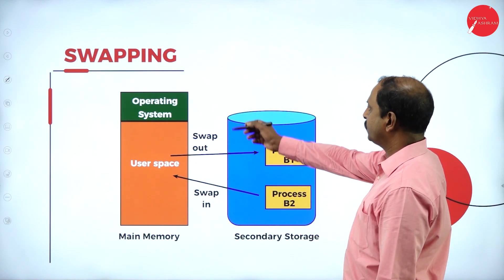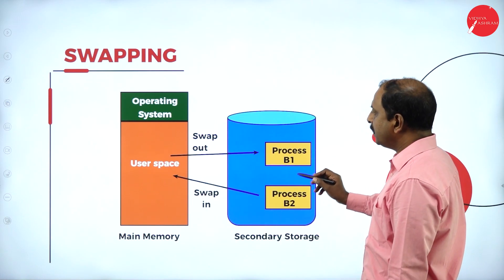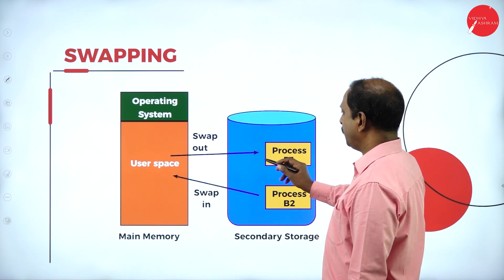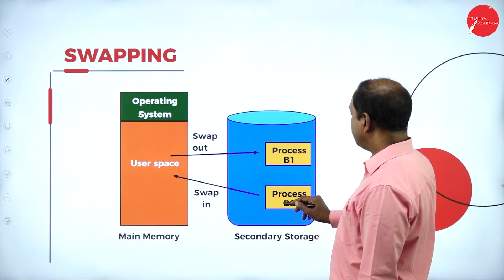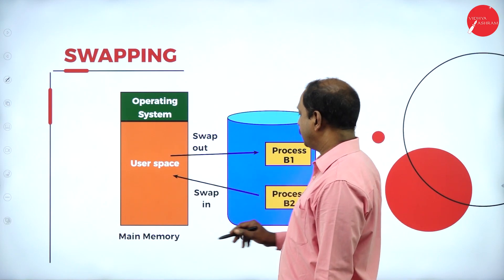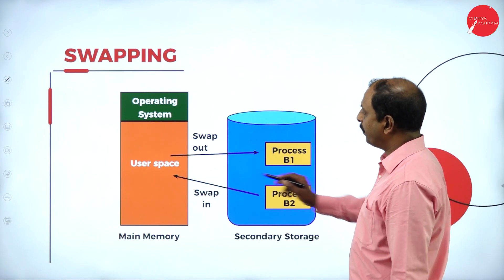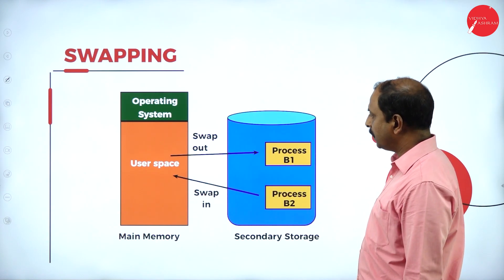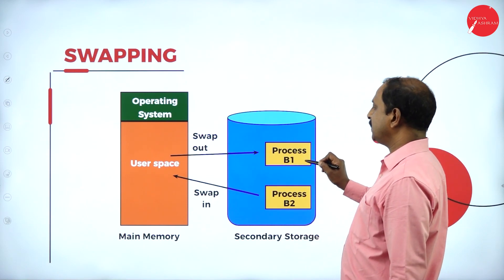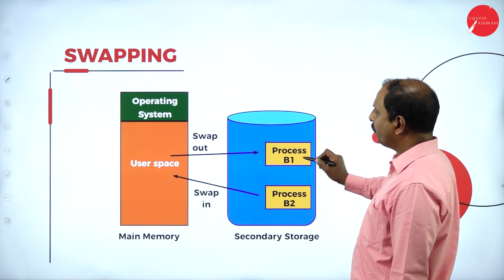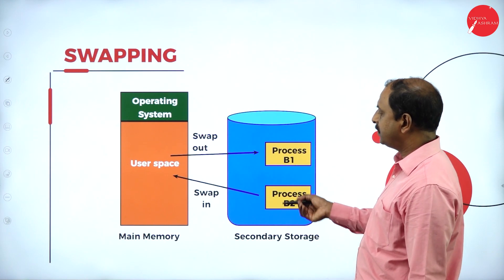Looking at the diagram: this shows the operating system, user space, and process one. Process B1 comes out of main memory — that is called swapping out. The process then goes into secondary memory, and once its time comes, it is brought back to main memory for execution. That is swapping.